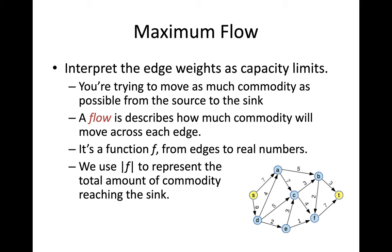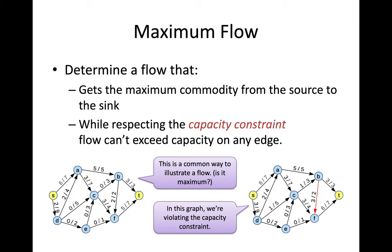We'll use the notation |F| to represent the total flow from the source to the sink — that is, the total amount of commodity reaching the sink in the graph.